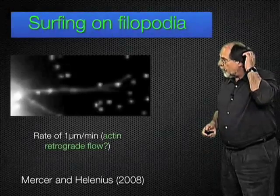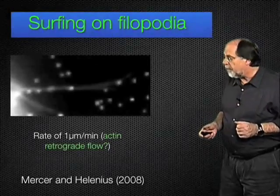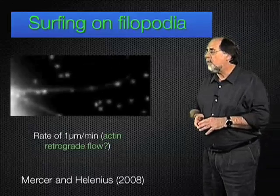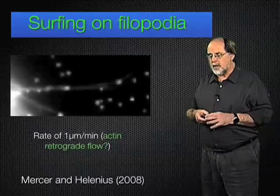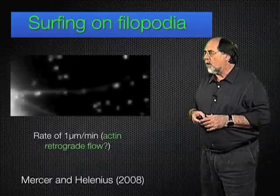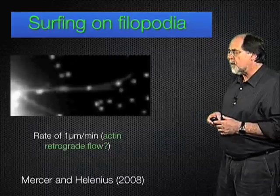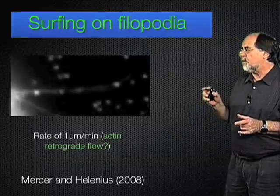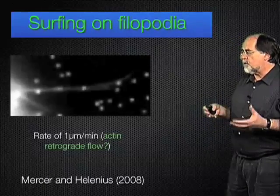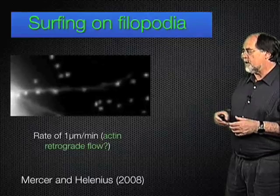The work started when Jason Mercer, a postdoctoral fellow from the United States, arrived in the lab and he had a viral particle which was labeled such that it's fluorescent. One of the core capsid proteins called A5 had a GFP, green fluorescent protein tag, and the virus is perfectly infectious but fluorescent.